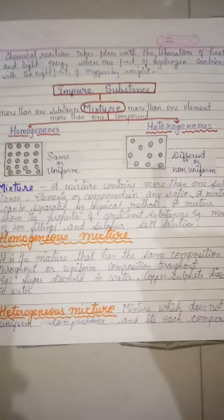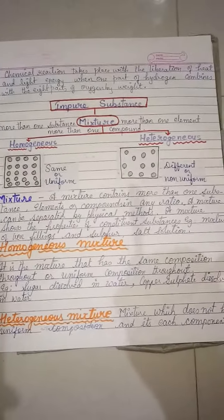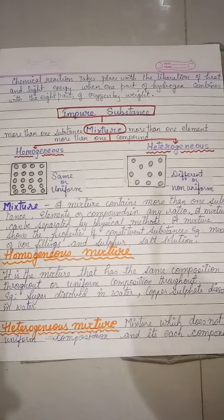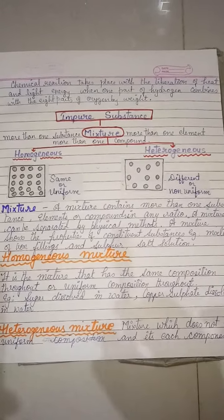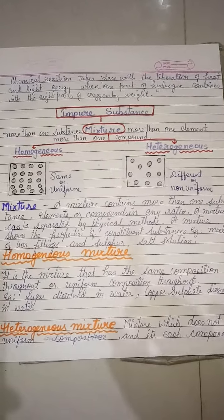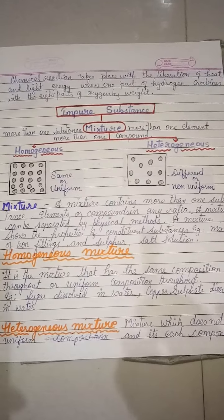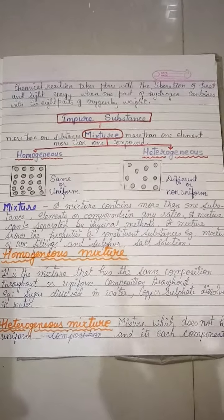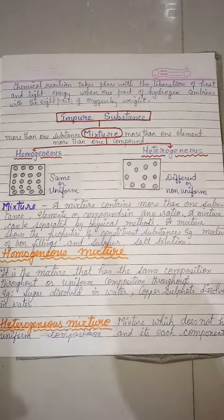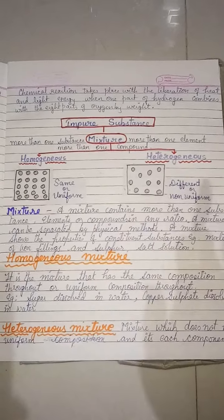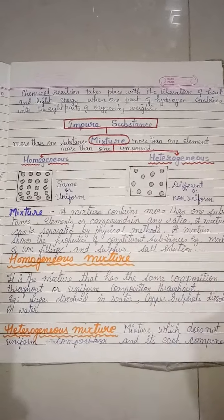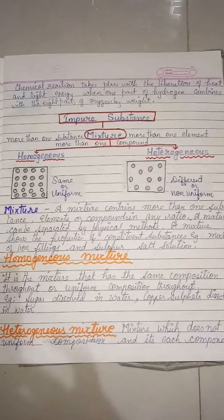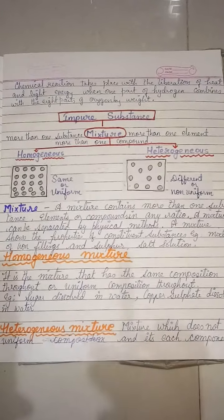A mixture can be separated by physical means and it shows the properties of its constituent substances. For example, if you take sugar water or salt water solution, you will see that the water is either sweet or salty — it is showing the constituent properties of the substance.